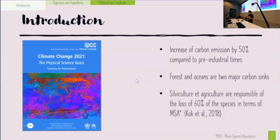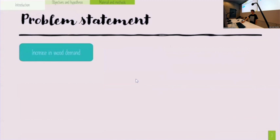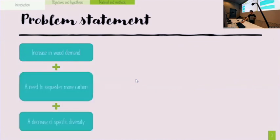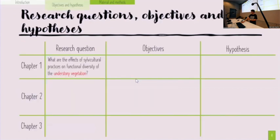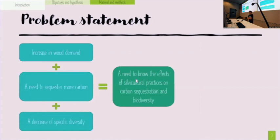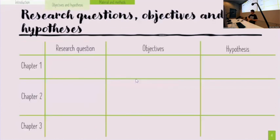Silviculture and agriculture are responsible for the loss of 60 percent of species in terms of mean species abundance. So we need to do something. We have an increase in wood demand, a need to sequester more carbon, and a decrease of species diversity. This means we need to know the effects of silvicultural practices on carbon sequestration and biodiversity.